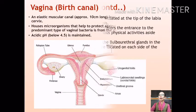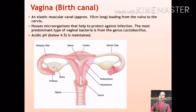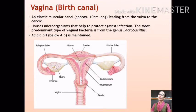A muscular canal that extends from the vulva into the cervix is the vagina. The vagina has three main functions: it acts as a passageway for menstrual blood; it receives the penis during sexual intercourse; and it provides a passageway for childbirth, hence the name birth canal. The vagina also maintains an acidic pH by the activity of prominent vaginal bacteria from the genus Lactobacillus, providing protection against infection.